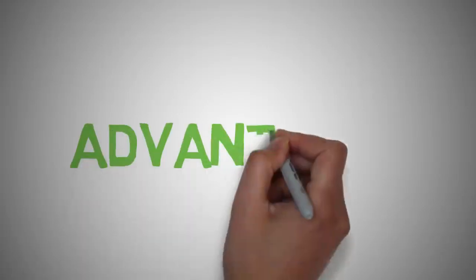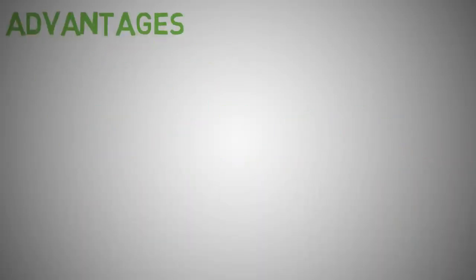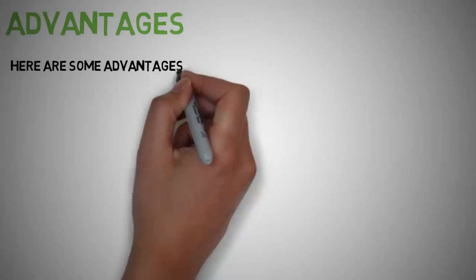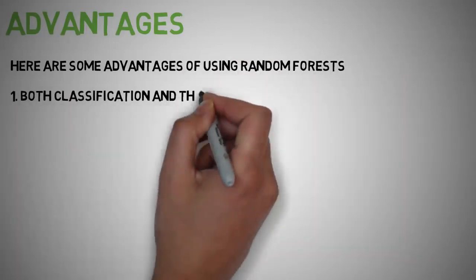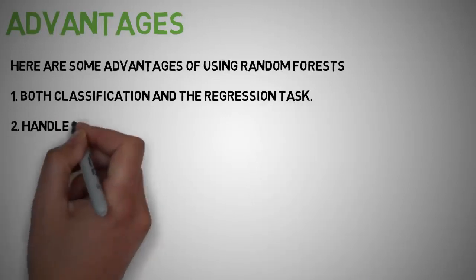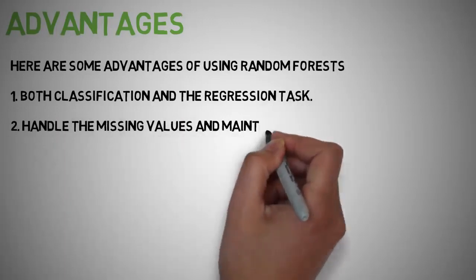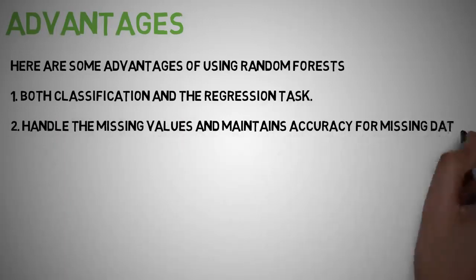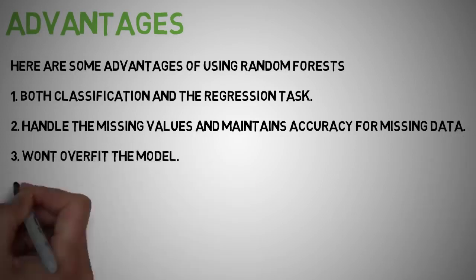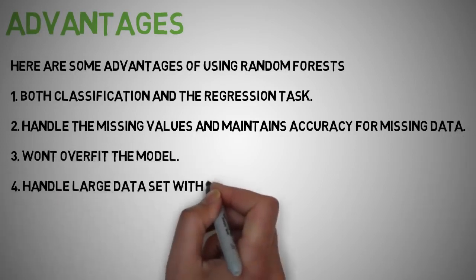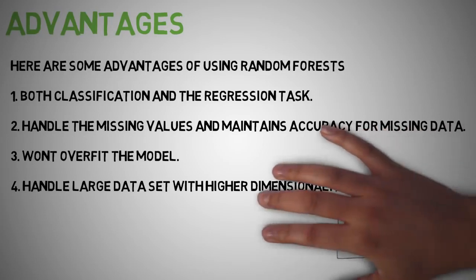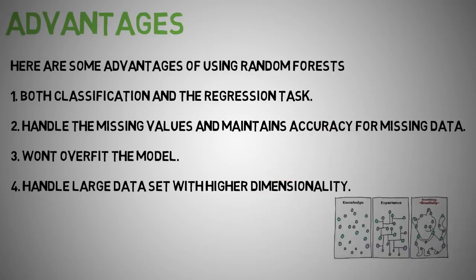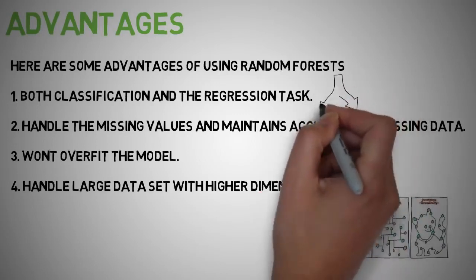So let's look at the advantages of the random forest. The same random forest algorithm or random forest classifier can be used for both classification and regression tasks. Random forest classifier will handle the missing values and maintain accuracy when a large proportion of the data are missing. When we have more trees in the forest, random classifiers won't overfit the model. It has the power to handle large data sets with higher dimensionality.